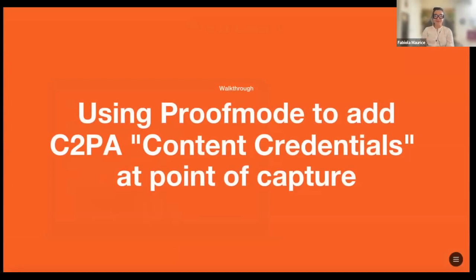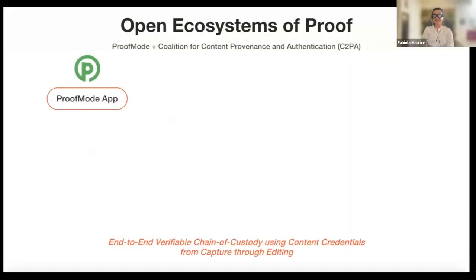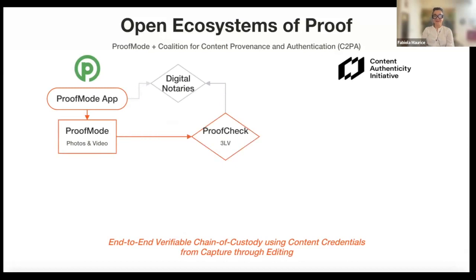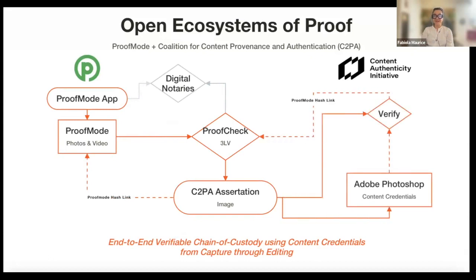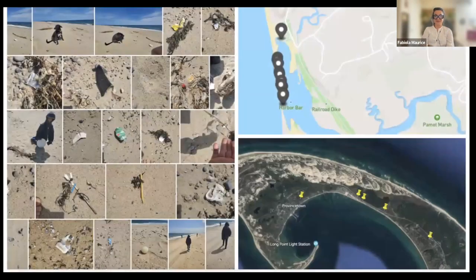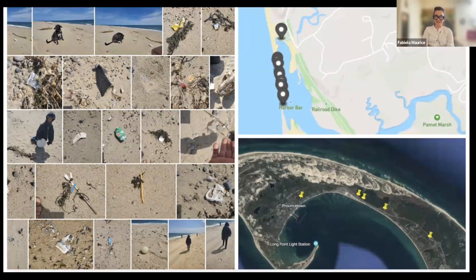We are also happy to announce that using proof mode, you can add C2PA credentials to images with the app. As a result, our users have access to an open ecosystem of proof where they can produce and check evidence using the proof mode system and the proof check tool, but also add C2PA credentials that can be checked using CAI tools like Verify or Photoshop. To see how this works, we'll use an example: a bundle of proof captured by one of our team members. He and his family were picking up trash in Cape Cod and used proof mode to document the trash they found. You can see all the images on the left and the location of where the pictures were taken on the right, with a satellite map at the bottom.